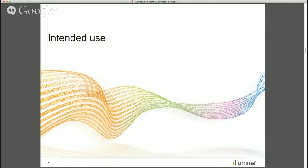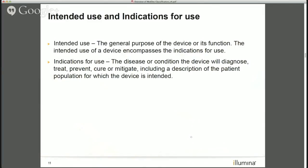Moving on to the intended use section. FDA lays out two definitions — one for intended use and a different one for indications. In reality these two terms are used interchangeably. The point is the intent and the words you put in there: the general purpose of the device and its function, the disease or condition, the diagnosis, the way the device is going to be used — that is the information FDA is looking at when determining how your device classification is going to fall and how it plays into risk.